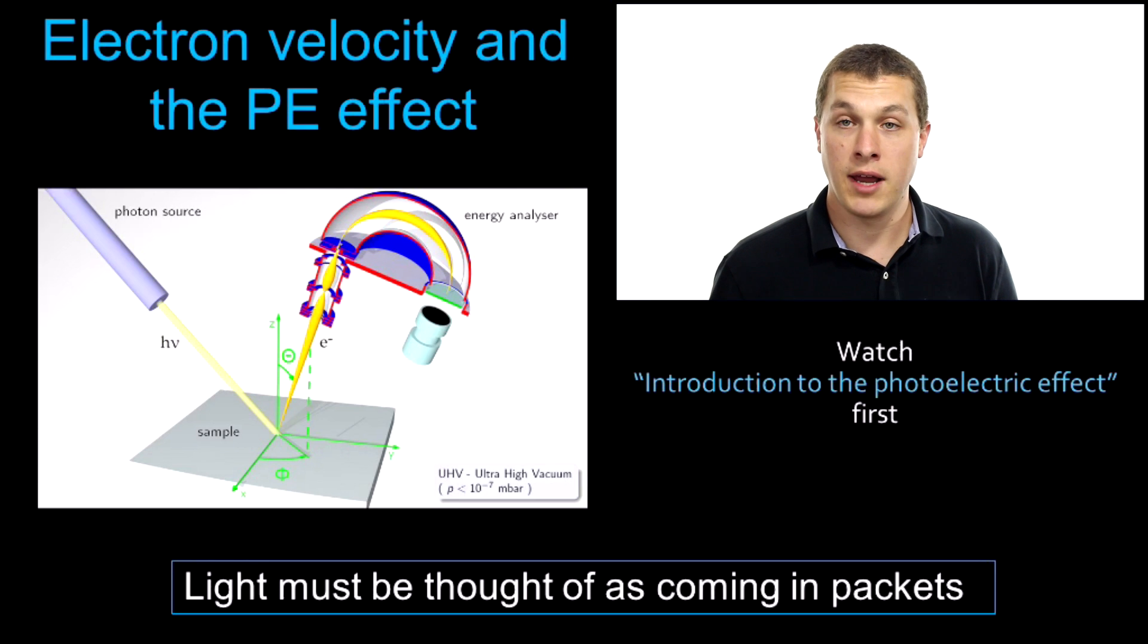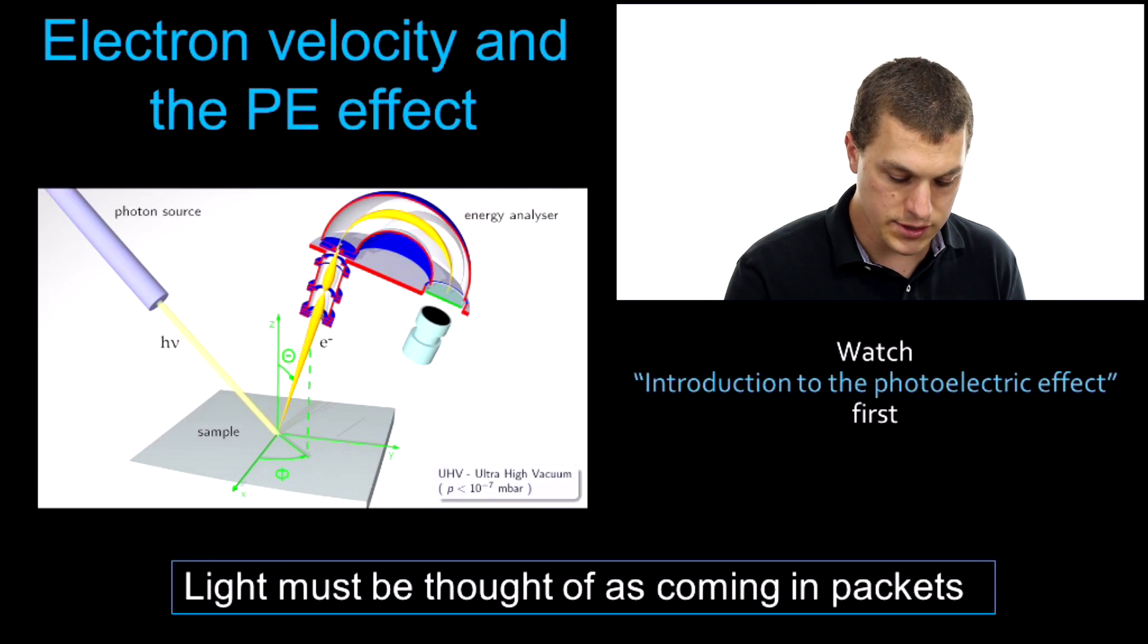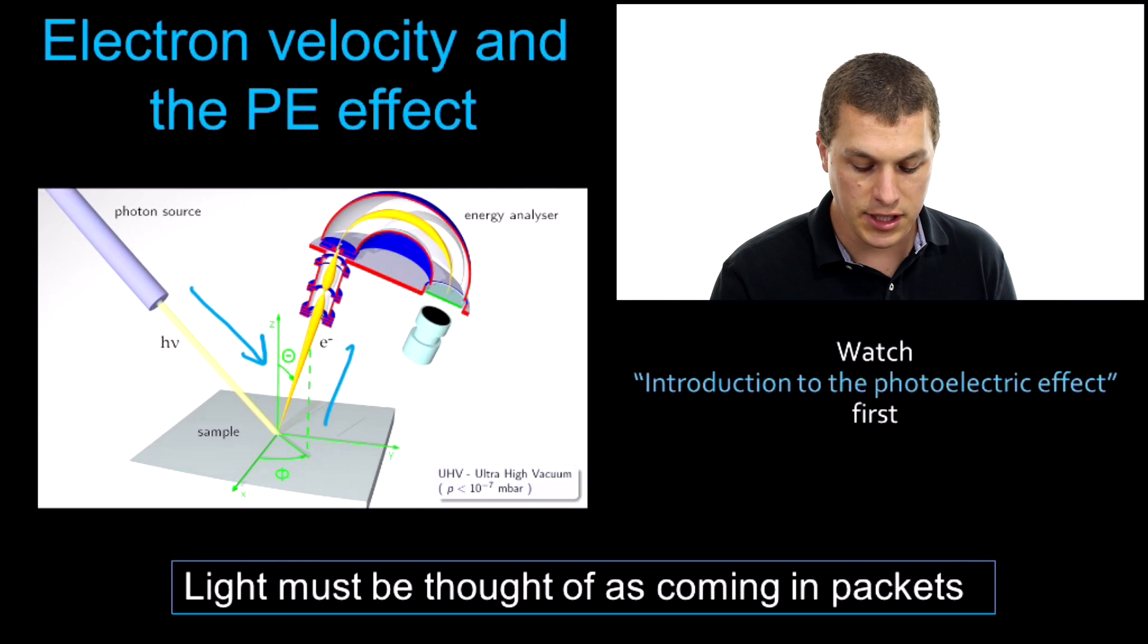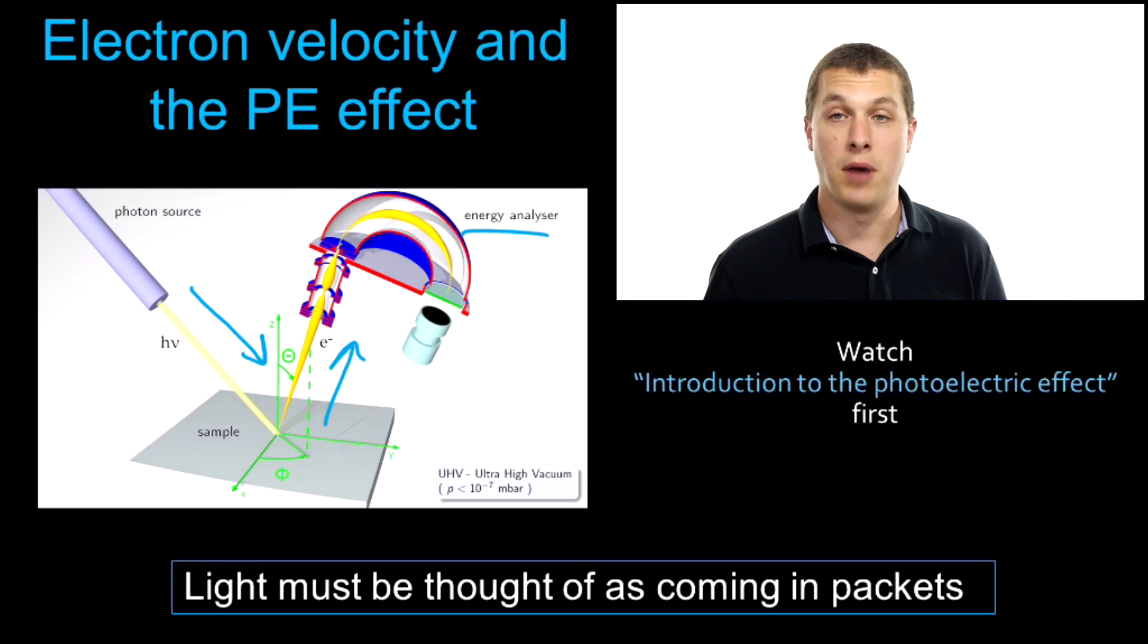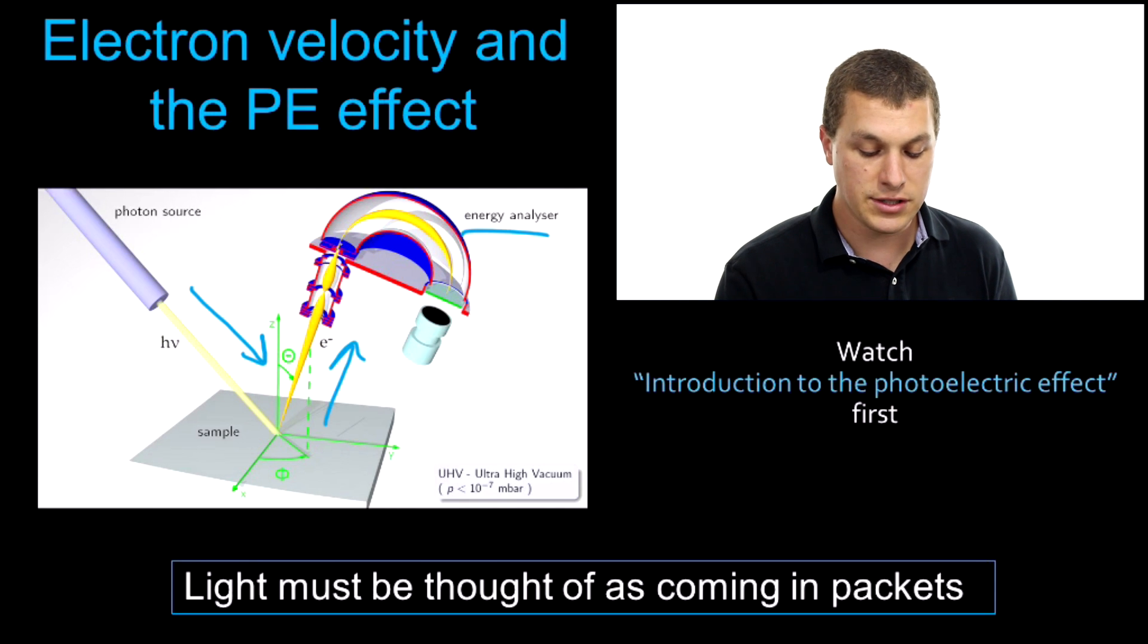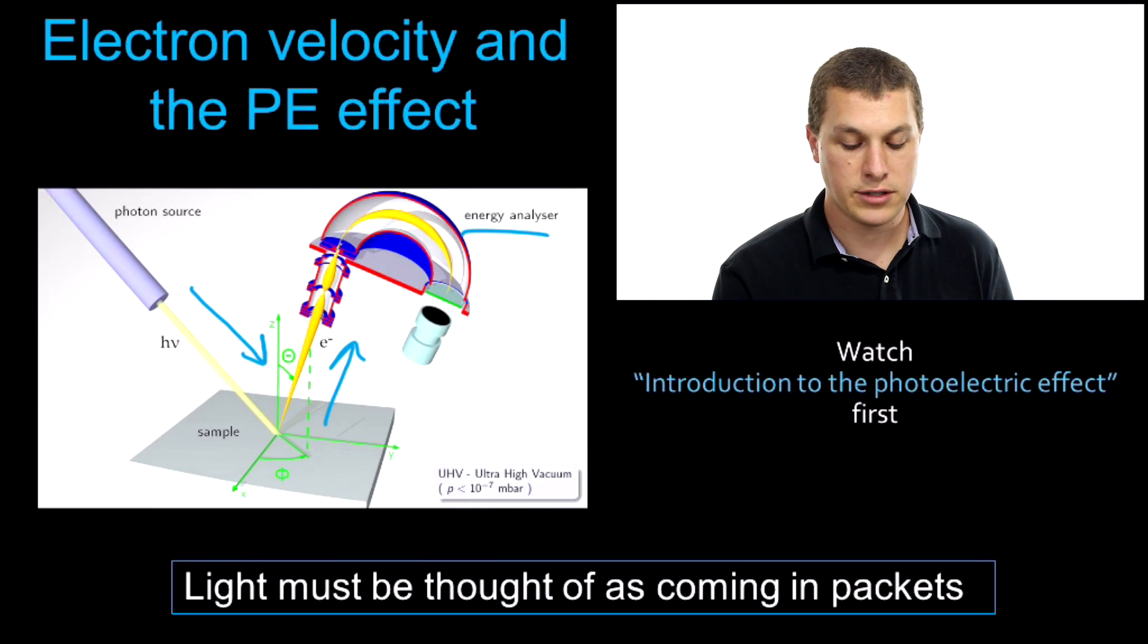The photoelectric effect tells us about the relationship between the light that goes down onto a metal sample and the energy of those electrons that come off of that metal sample, which we analyze with an energy analyzer that tells us how fast those electrons are going. Strictly speaking, it gives us the kinetic energy, but we can actually use the photoelectric effect experiment to calculate how fast those electrons are going, and that's what we're going to do in this video.